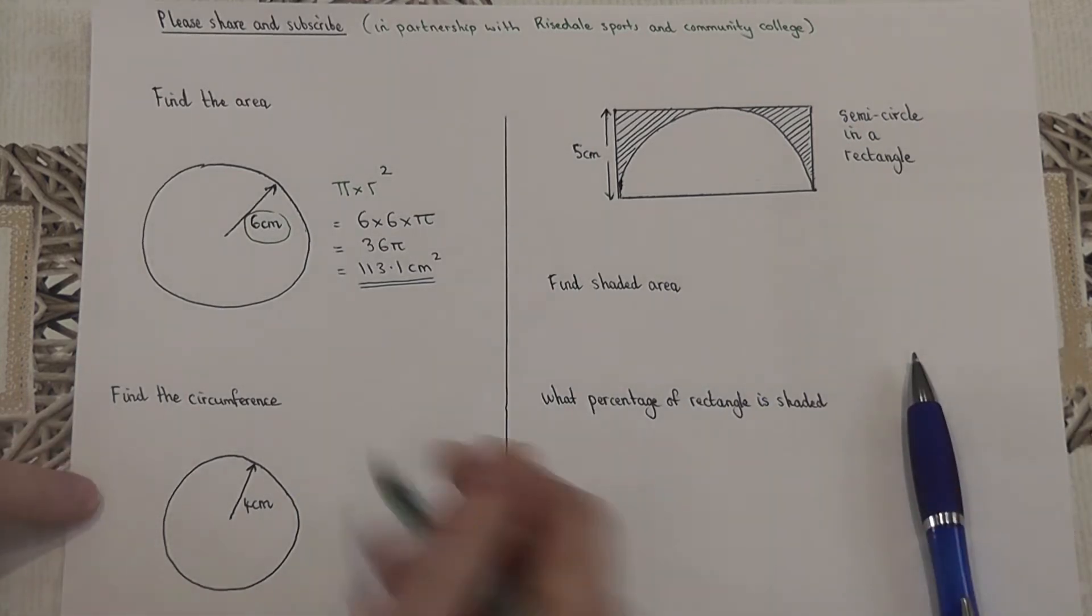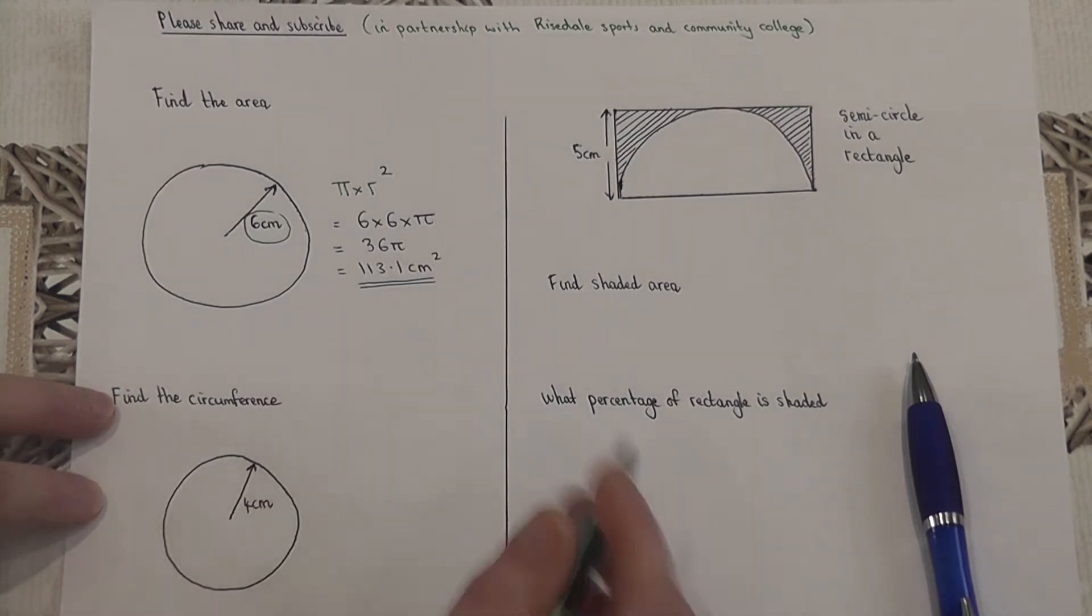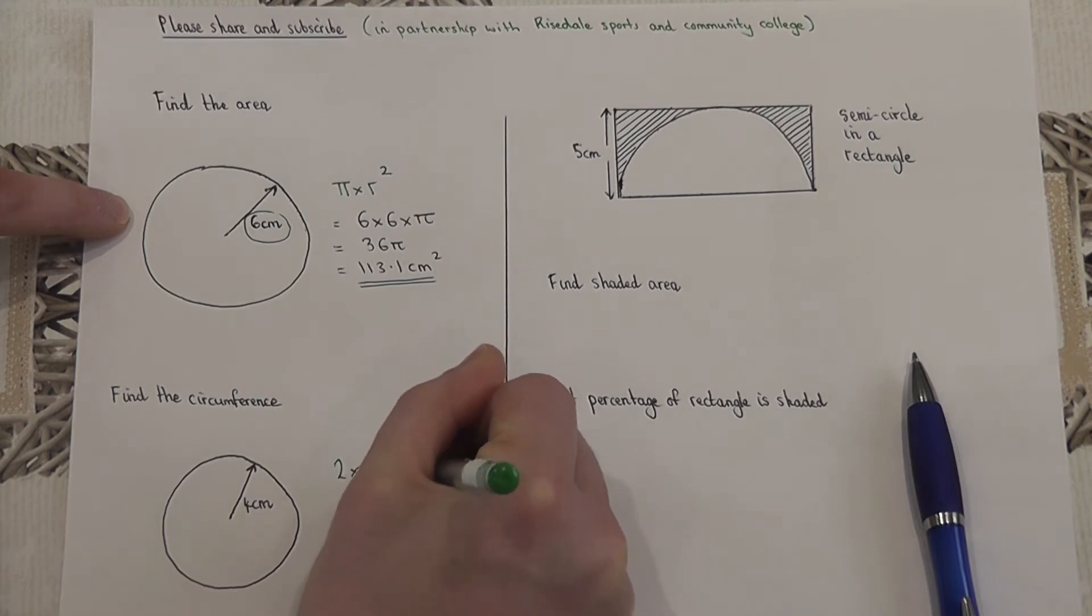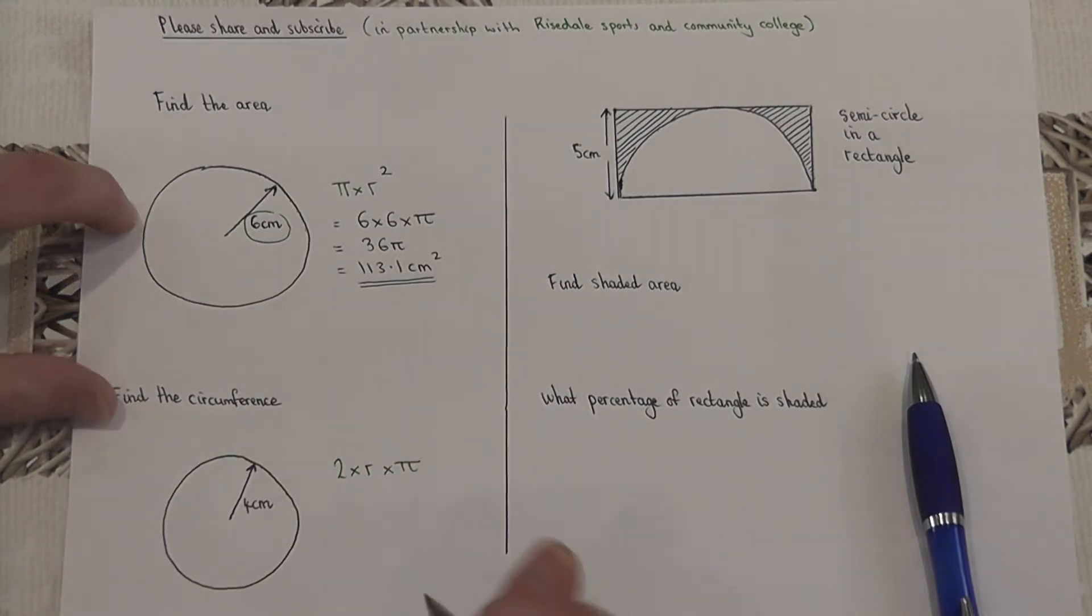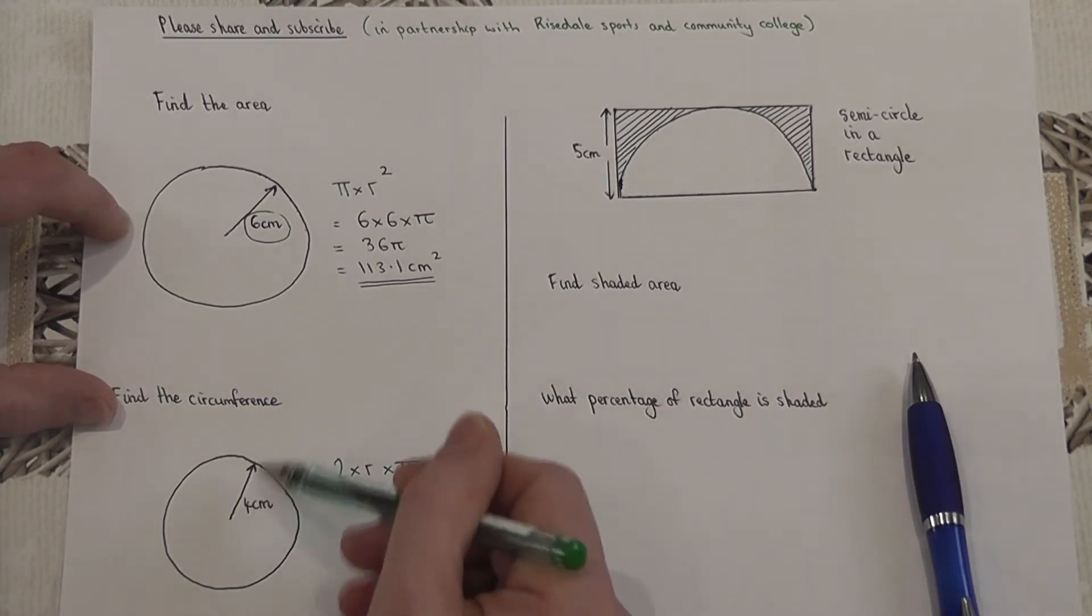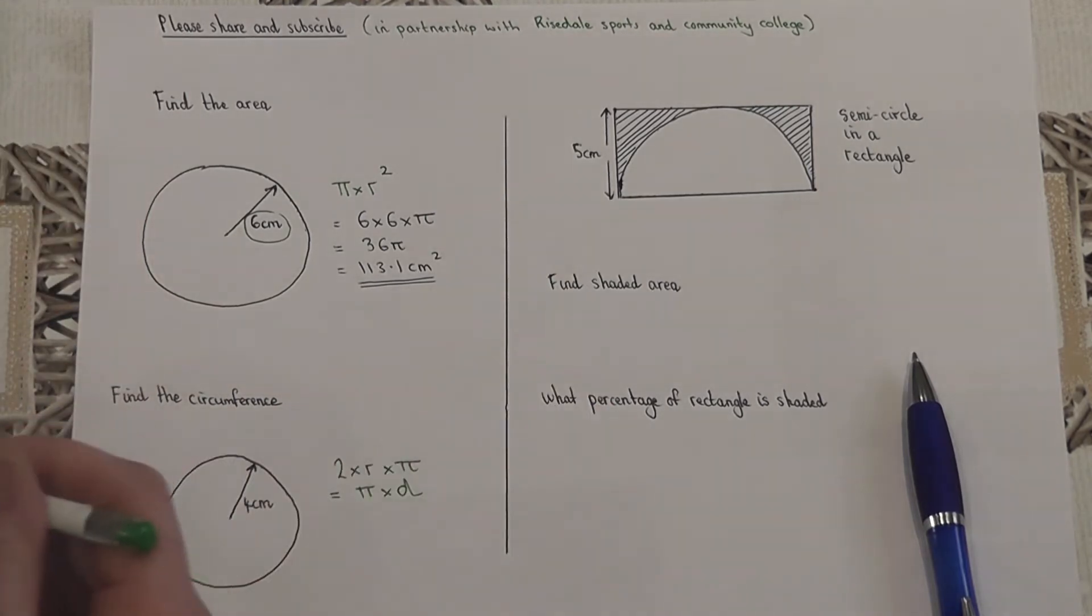Now if we're told the radius, which in this case is 4, then to work out the circumference we do twice the radius and then times by pi. Sometimes you're told the entire diameter, which in this case would be 8, so you might also meet pi times the diameter.